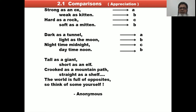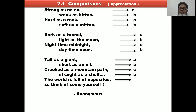The seventh stanza has six lines. When there are more lines, the rhyme scheme extends. 'Tall as giant' — label A. 'Short as an elf' — label B. 'Crooked as mountain path' — label C. 'Straight as shelf' — 'elf' and 'shelf' rhyme, label B. 'The world is full of opposites.' — label D. Then B again. So the rhyme scheme here is A, B, C, B, D, B.